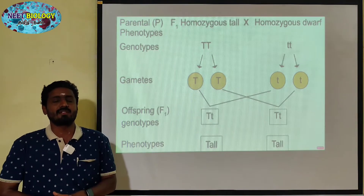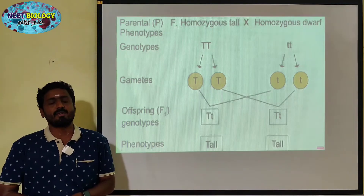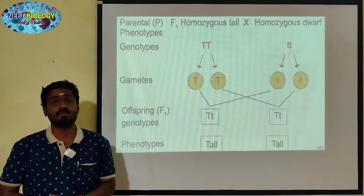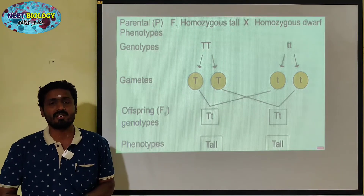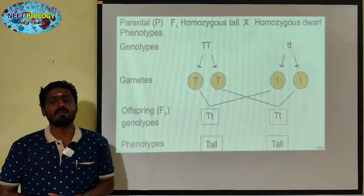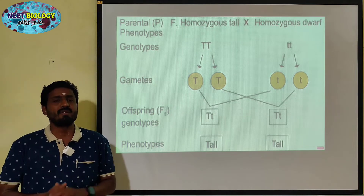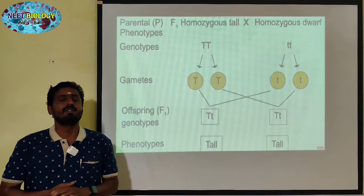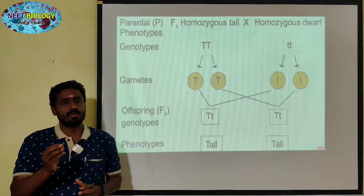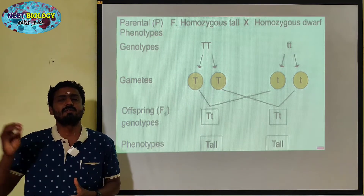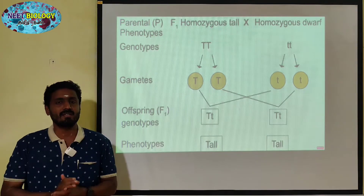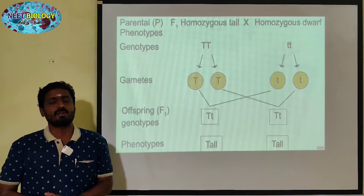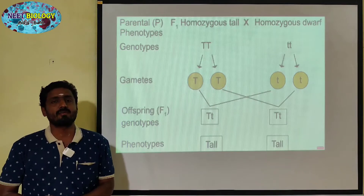The result of the F2 generation is 3 is to 1, which is the phenotypic ratio, and 1 is to 2 is to 1, which is the genotypic ratio, respectively.